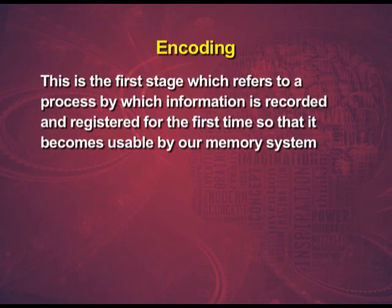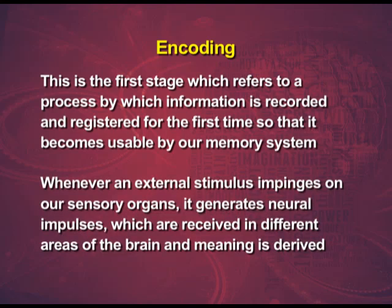Encoding is the first stage, which refers to a process by which information is recorded and registered for the first time so that it becomes usable by our memory system. Whenever an external stimulus impinges on our sensory organs, it generates neural impulses, which are received in different areas of the brain and meaning is derived. It is then represented in a way so that it can be processed further.